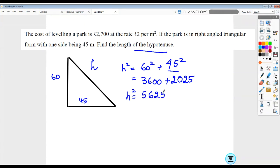So h would be the positive square root of 5625, and when I try to take it out orally, it's 75. So the hypotenuse is 75 meters.